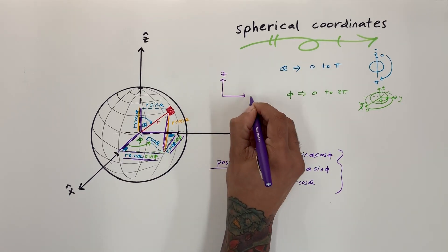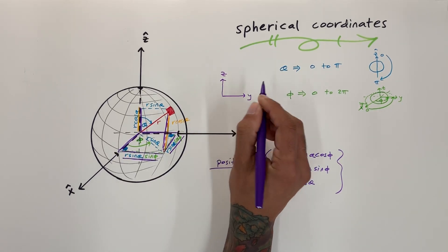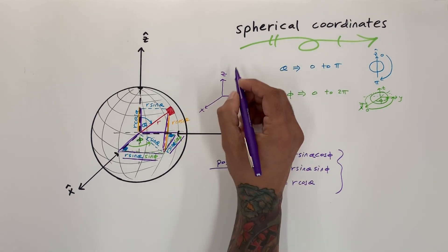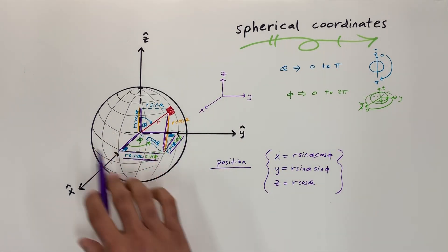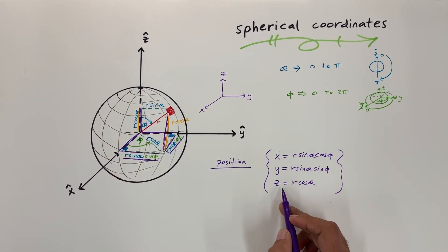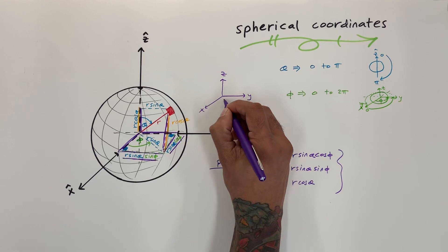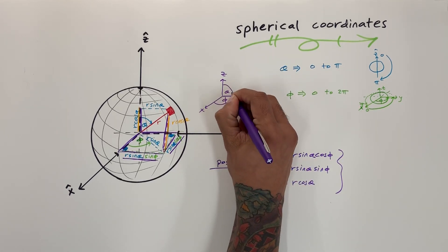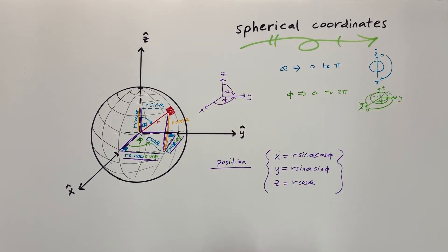We see how we took the Z direction, the Y direction, and X direction and found their spherical coordinate expressions. Phi sweeps in the XY plane, theta comes down from the top, and that's how we get those spherical coordinates.